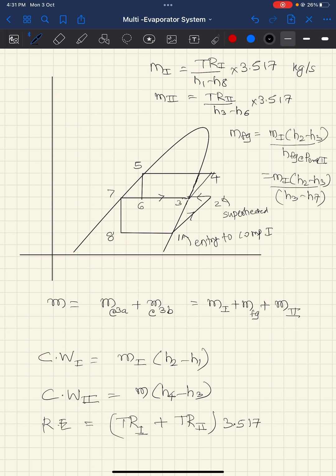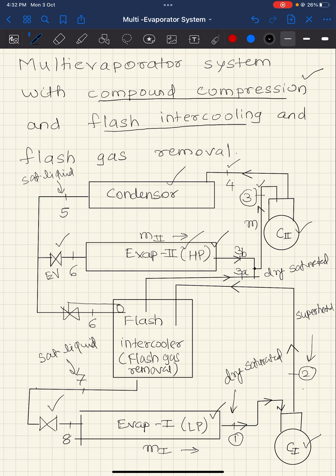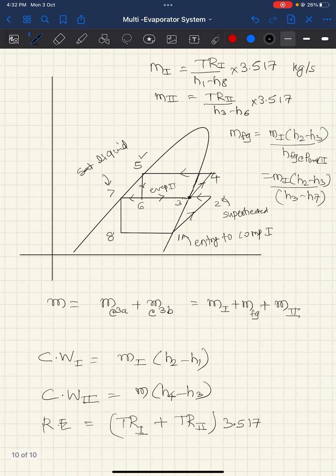The refrigerant evaporated in evaporator two also enters as state three, so two refrigerants mix — the one desuperheated in the flash intercooler and the one evaporated in evaporator two. State three enters the second-stage compressor, reaching state four. It is then condensed to state five, expanded in expansion valve one to state six, flash gases are removed in the flash chamber, and the saturated liquid at state seven is expanded to state eight, continuing the cycle.